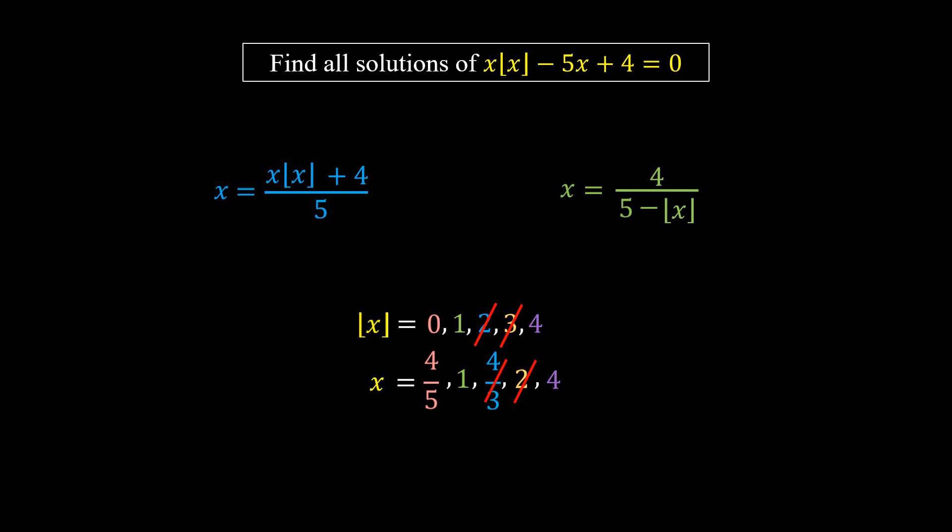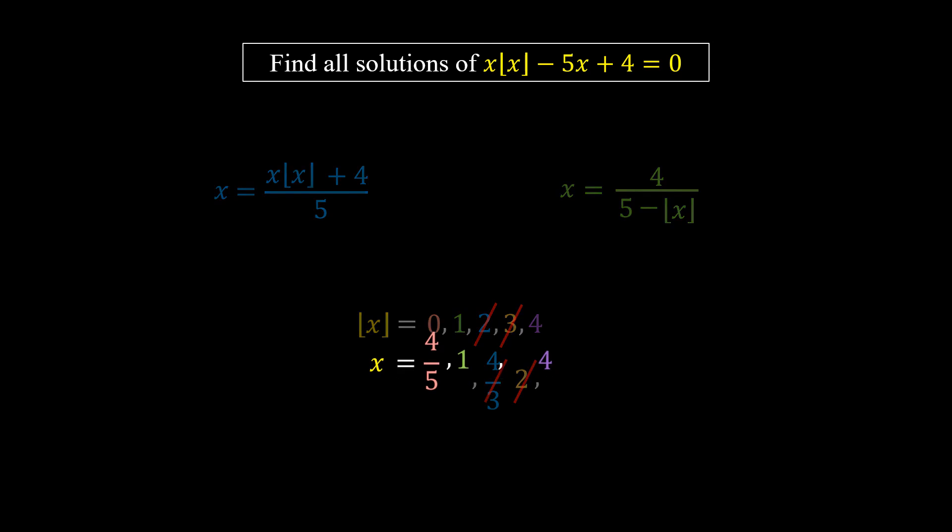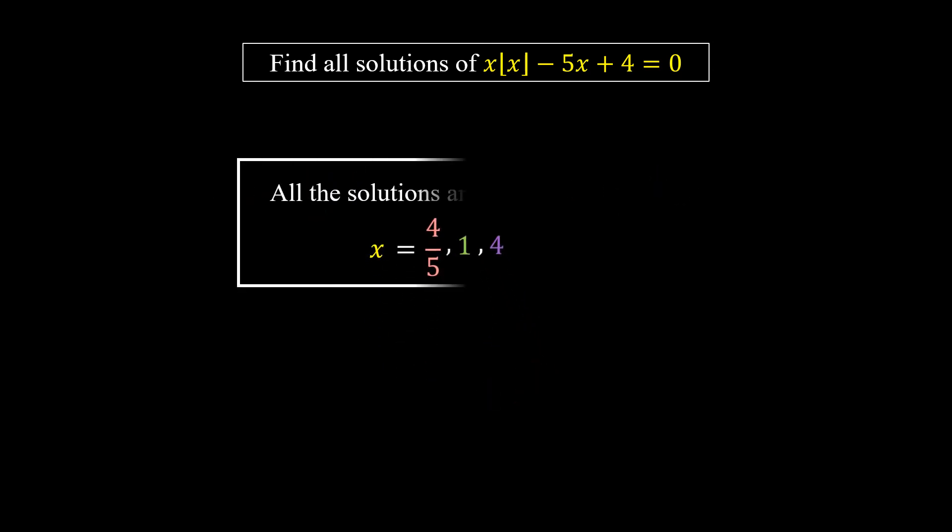So all the possible values of x are 4/5, 1, and 4. These three values satisfy the equation, so all the solutions are 4/5, 1, and 4. And there we are done.